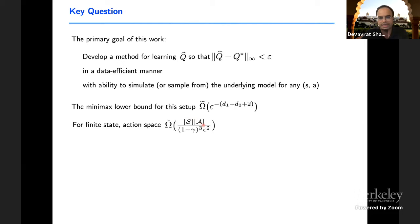The number of samples required must scale as epsilon to power minus (D1 plus D2 plus 2), as it scales both with the dimensions of state space and action space in this manner. More precisely, if it's finite state, then it's simply product of state and action space.